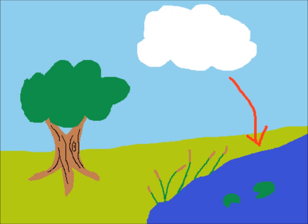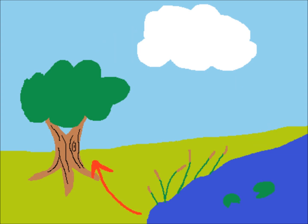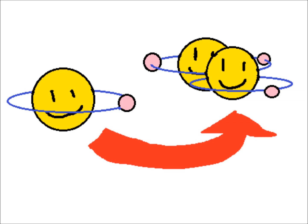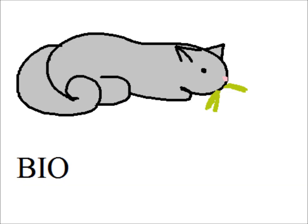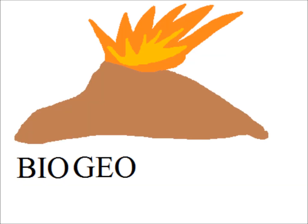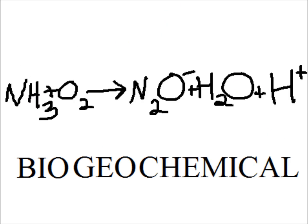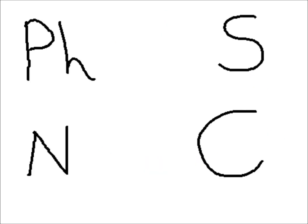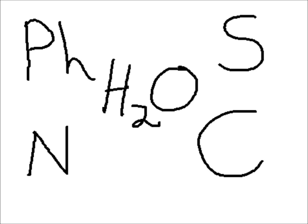These elements don't stay in one place, but move through the world in different forms called reservoirs. The means by which the elements travel are called biogeochemical cycles, because they consist of biological processes, geological processes, and chemical processes. This series focuses on the cycles of four elements and one compound, or a combination of elements.